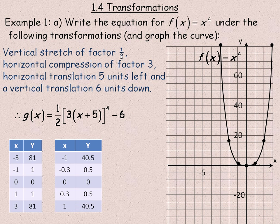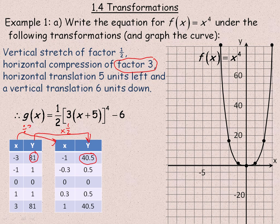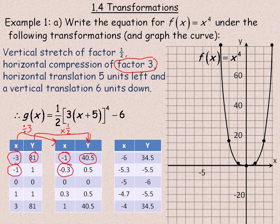I'll handle the vertical stretch of a half and the horizontal compression of factor 3 first. In this table, the vertical stretch of a half means all the y values are multiplied by a half — so 81, for example, becomes 40.5. The horizontal compression of factor 3 means I've taken all the x's and divided them by 3. So negative 3 divided by 3 is negative 1, and negative 1 divided by 3 is approximately negative 0.3.